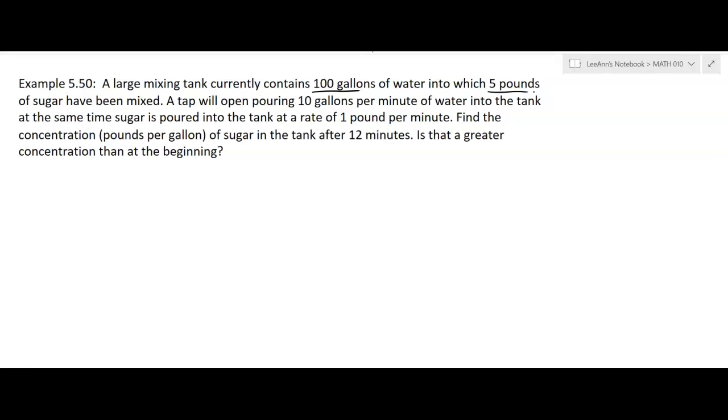A tap will open pouring 10 gallons per minute of water into the tank. Now when it says gallons per minute like that, we're talking about a rate. The water's coming in at a particular rate. It's going to be based on time in minutes. So the tap's going to open and pour 10 gallons per minute of water into the tank.